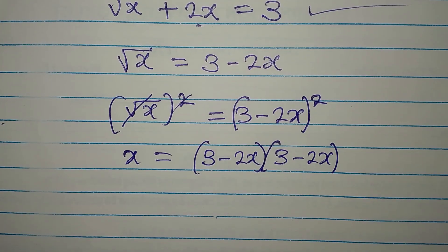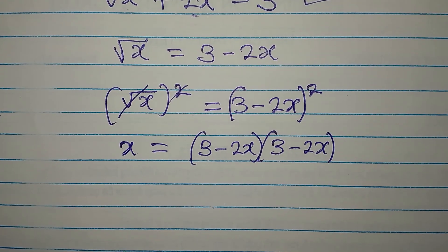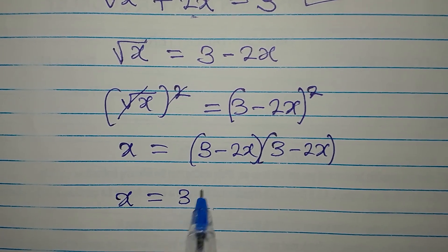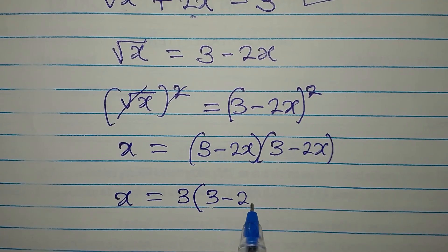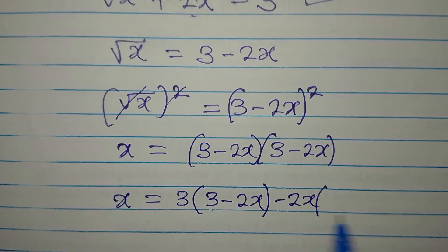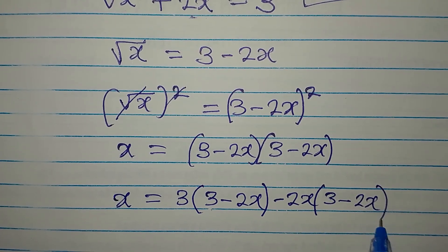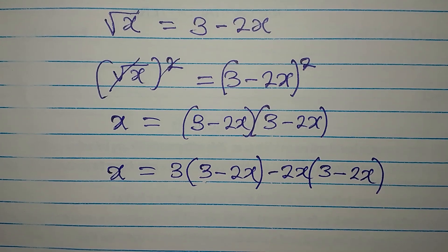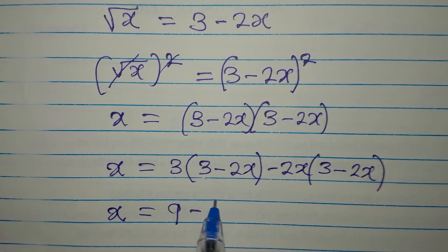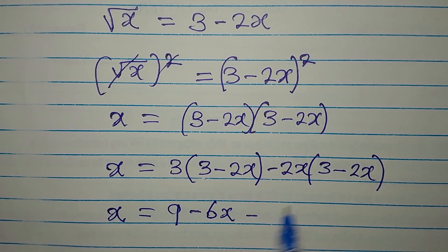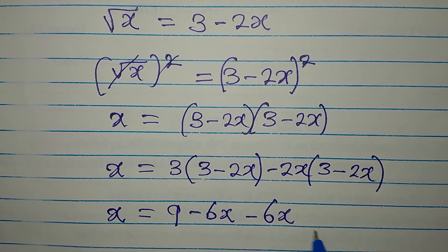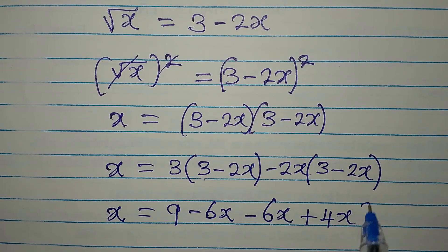Now we expand. How do we do the expansion? Just look at what I'm about to do. x equals 3 multiplied by 3 minus 2x, then minus 2x multiplied by 3 minus 2x again. So if we proceed, we have x equal to 3 times 3, that is 9, minus 6x, then minus 2x times 3 gives minus 6x again.